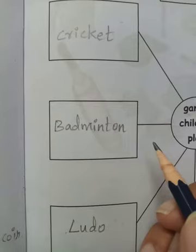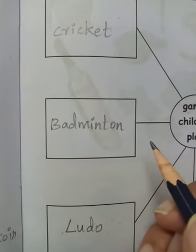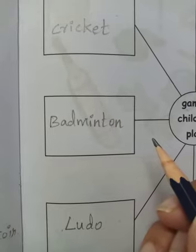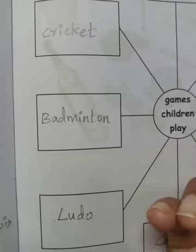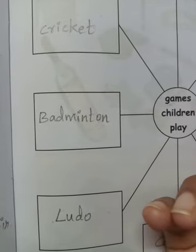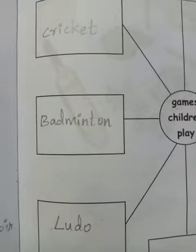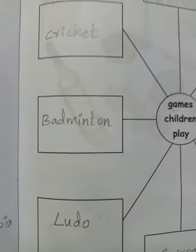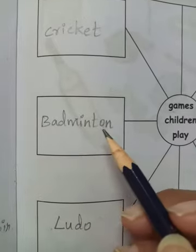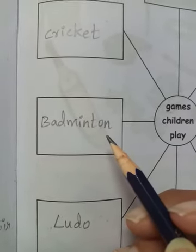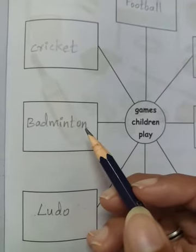Next game: badminton. Badminton is also known as shuttle. Two players or four players can play shuttle - one or two on each side. There is a shuttlecock and you hit it back and forth. Badminton: B-A-D-M-I-N-T-O-N. In this way we have written eight different game names.